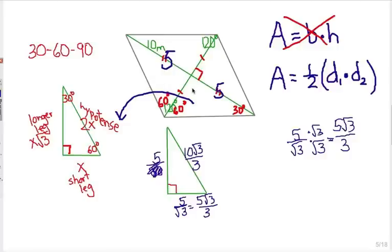So let me write this in. The short leg is going to be 5 radical 3 over 3. Now we put those together, of course, because we need the entire short diagonal. And that's going to be 10 radical 3 over 3. So let's complete our formula here.